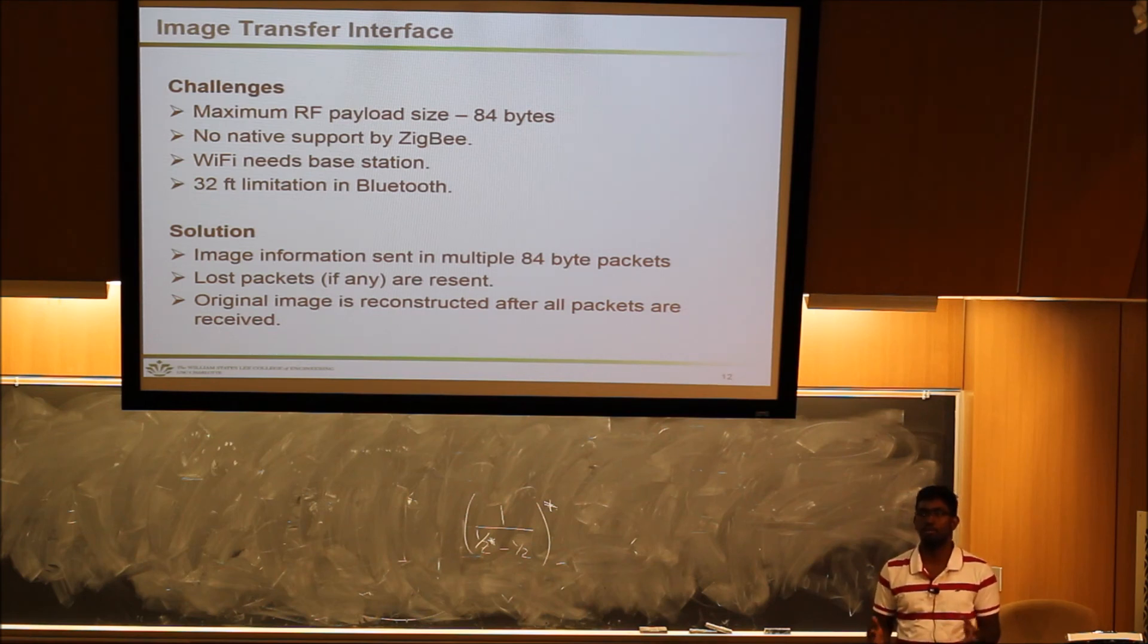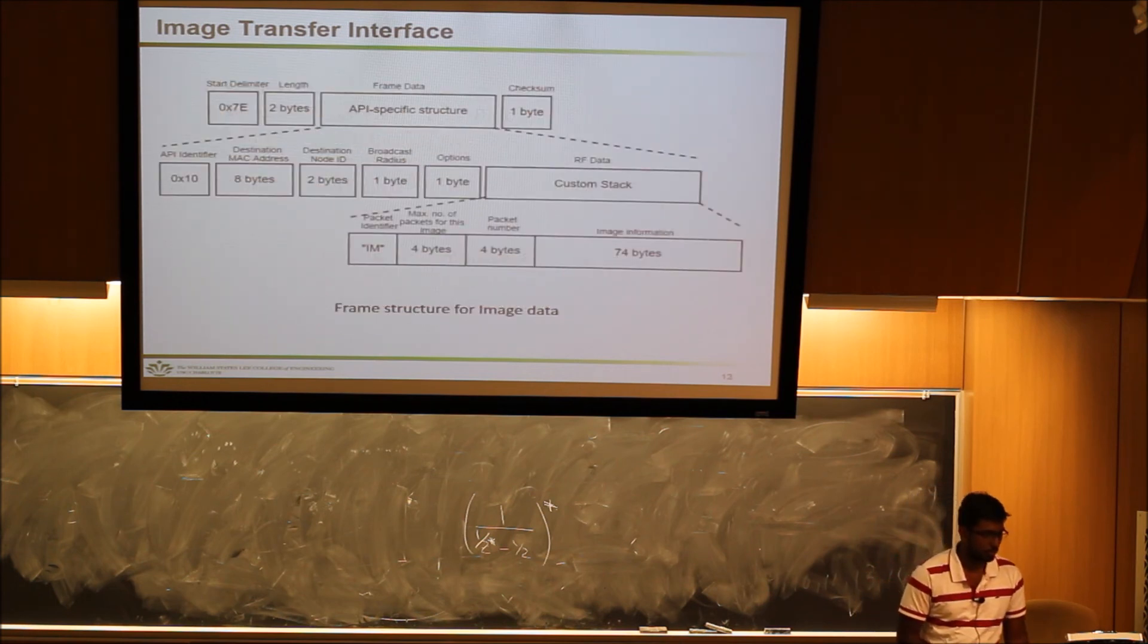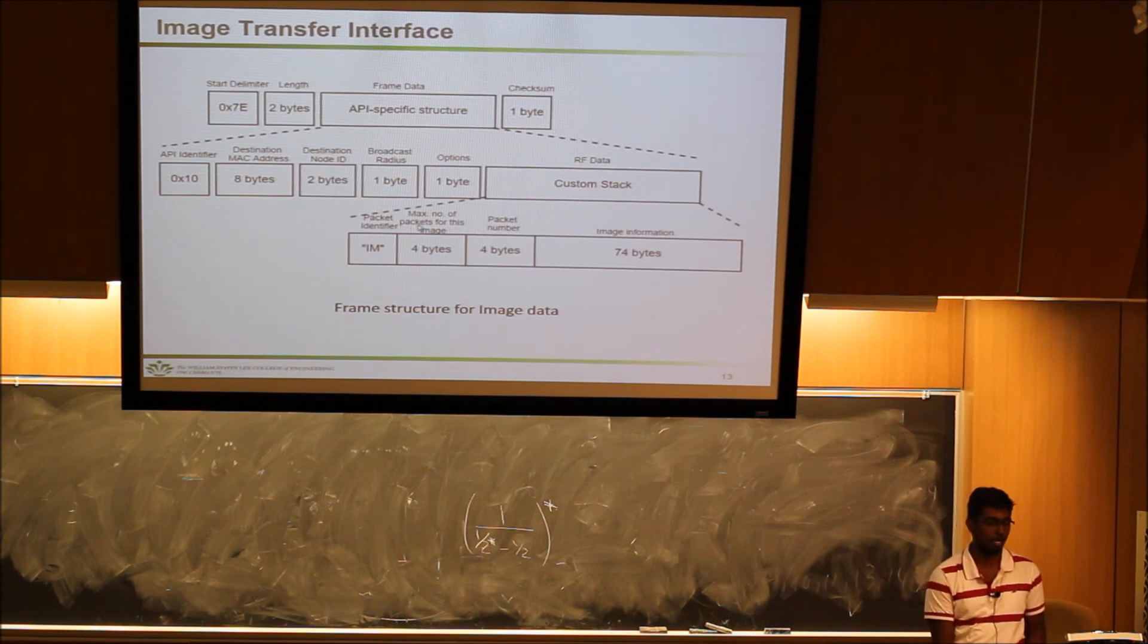This is not too much time doing nothing. This was the frame structure for image data. The first two lines are the actual Zigbee frame for a transmit packet. Within the RF data, we created a custom frame. The first two bytes are a packet identifier.